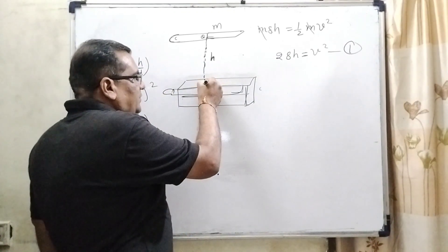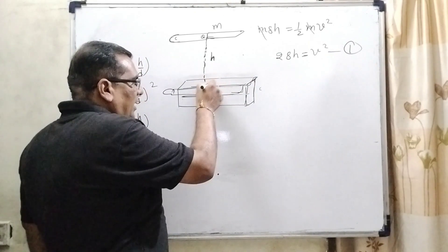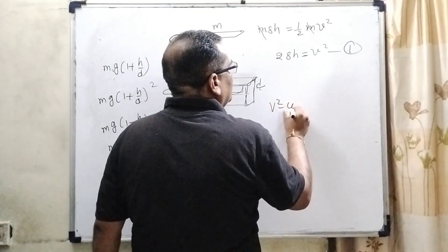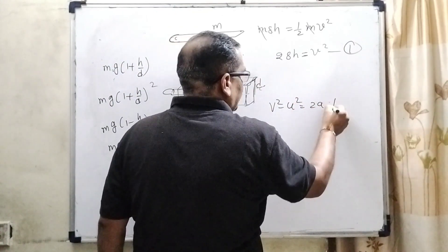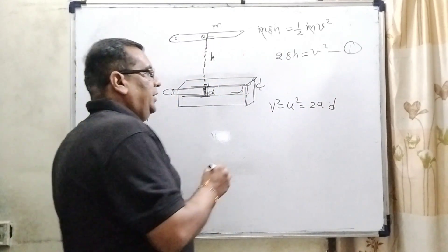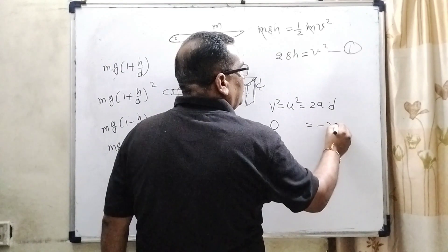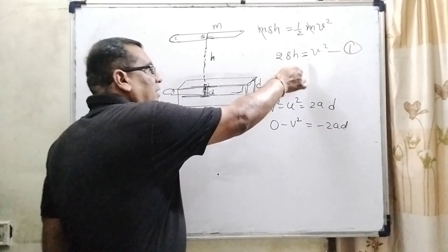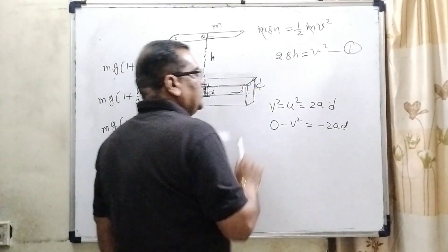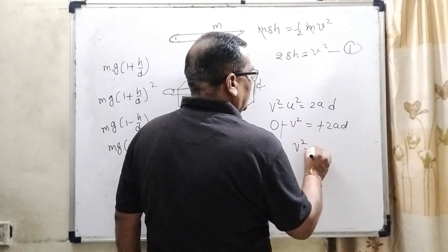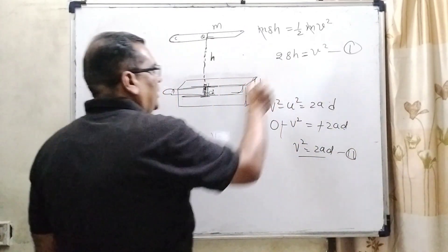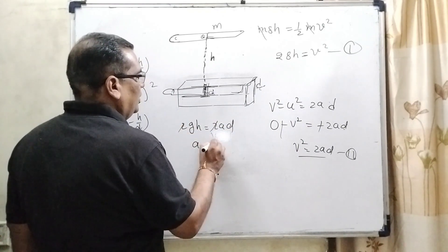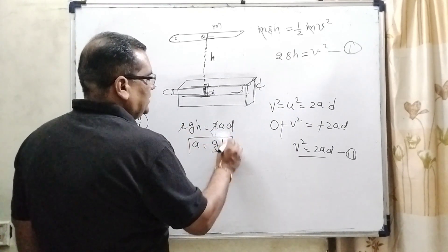And when it is falling on this wooden block and then stuck and appears inside at the depth D, then we are using the formula V square minus U square equal to 2AS, where S is D. Final velocity becomes 0, which means retardation. We are using minus 2AD negative, and U becomes the initial value. So here V square, negative negative cancel. V square equal to 2AD. And now substitute this value of V square in equation first: 2GH equal to 2AD. 2 cancels out, then acceleration equal to GH upon D. This is equation number third.